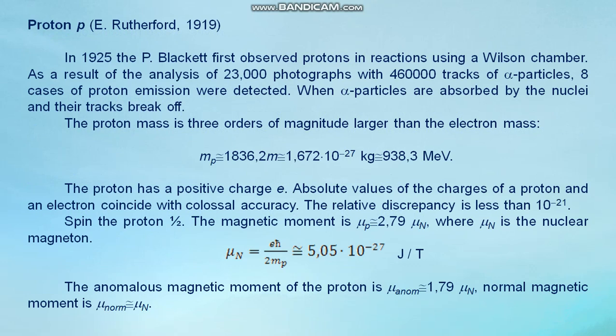Proton. In 1925, Blackett first observed protons in reactions using a Wilson chamber. As a result of the analysis of 23,000 photographs with 460,000 tracks of alpha particles, six cases of proton emission were detected when alpha particles are absorbed by the nuclei and their tracks break off.